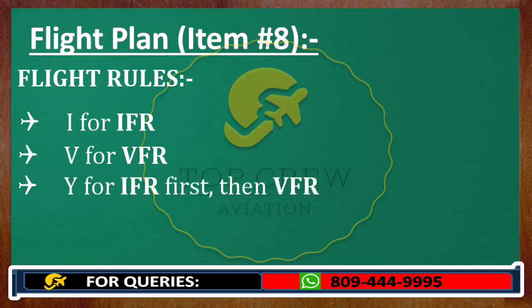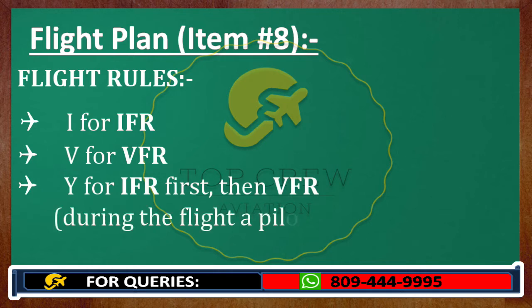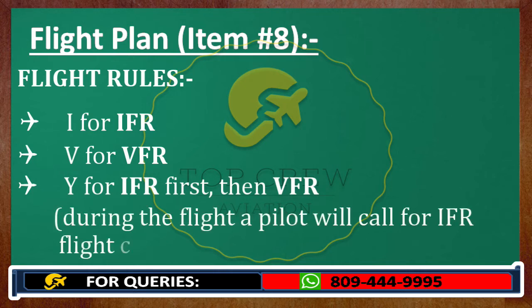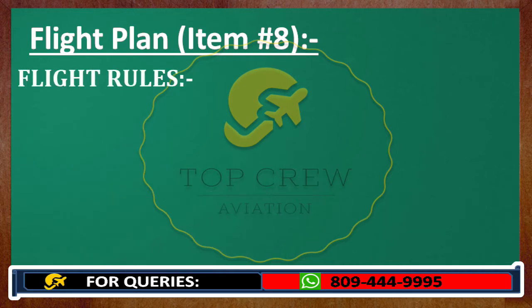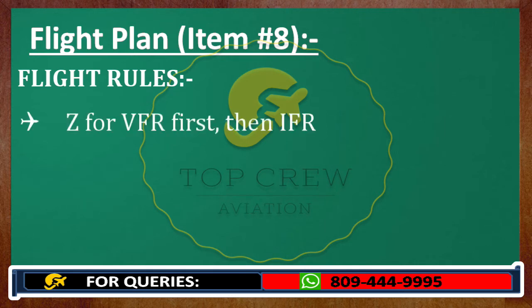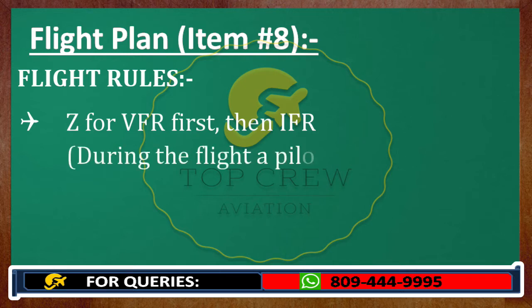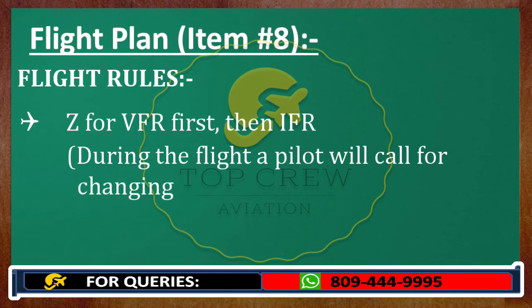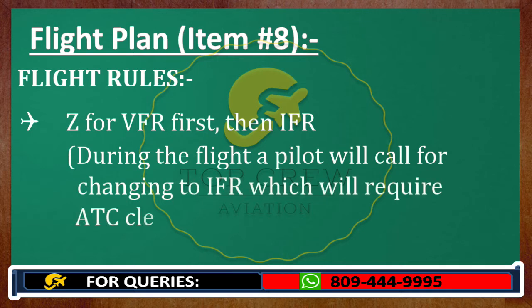Yankee will indicate to ATS that during the flight, a pilot will call for IFR flight cancellation. Next is Zulu for VFR first, then IFR. This will indicate to ATS that during the flight, a pilot will call for changing to IFR, which will require ATC clearance from ATS.